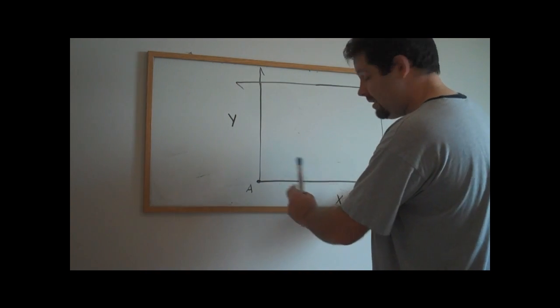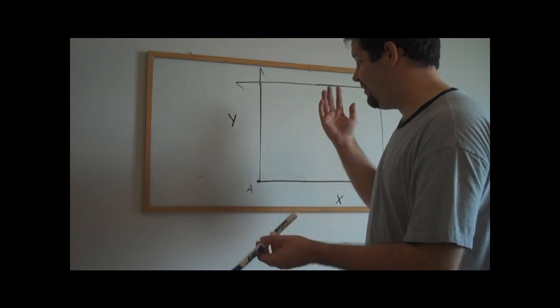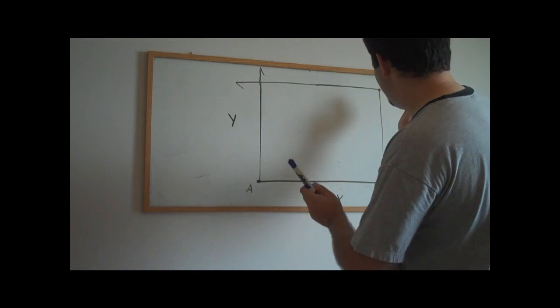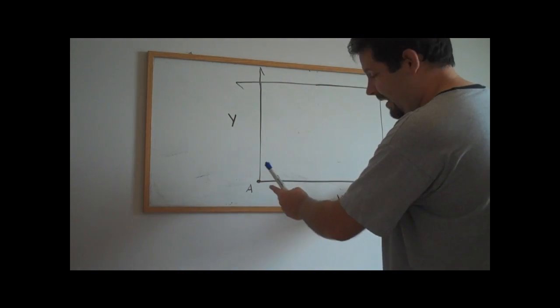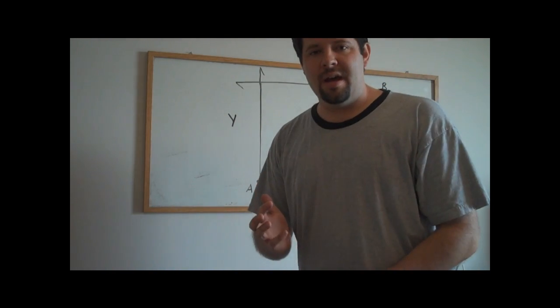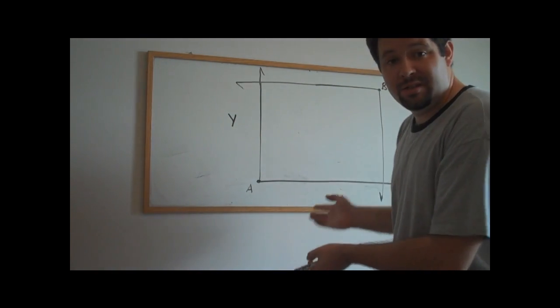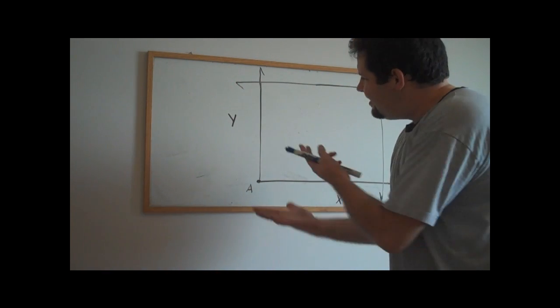The length of the box is going to be the total endowment of good x. How much was individual A endowed with x? How much was individual B endowed with x? Add those two up, and that's what you get as the length of the box. Any way of dividing up the amount of x, that's not going to change, so we can set the length of the box as fixed.